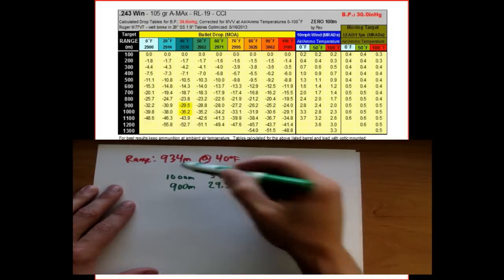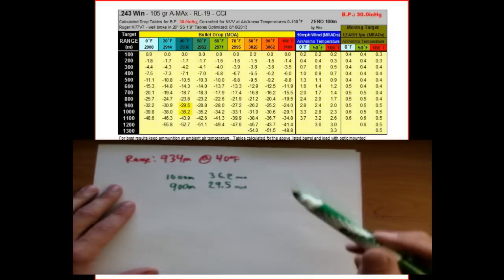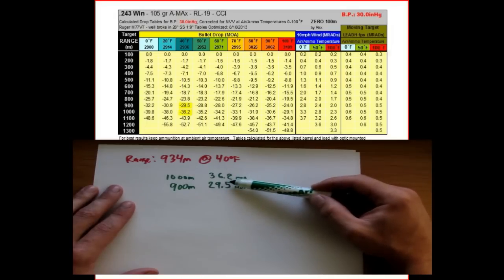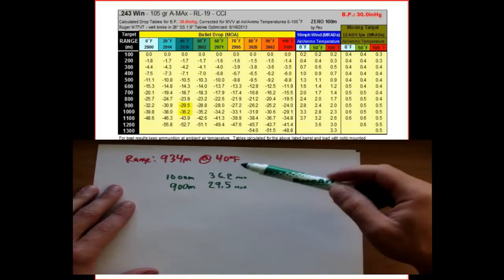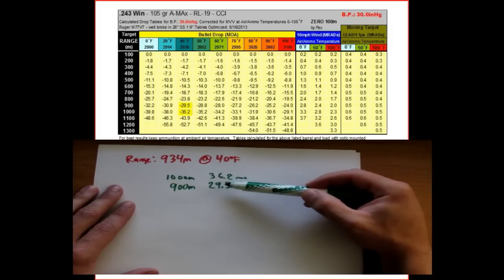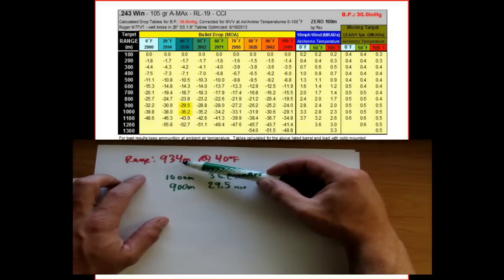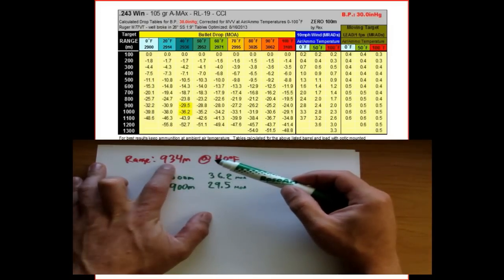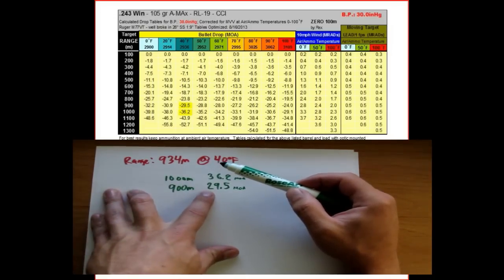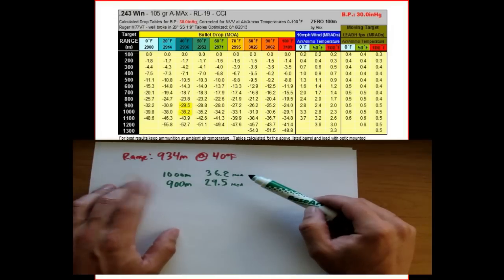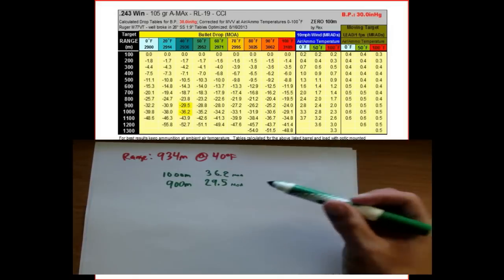We have the data for 1,000 and 900. To find the data for 934, we're going to find the difference between those two numbers by subtracting, then multiply that by 34%. Why 34%? Because 934 meters means we're 34 meters — 34% of the way — past 900 on its way to 1,000. So 34% of the way past the lower value gives us the correct drop data in linear interpolation form.